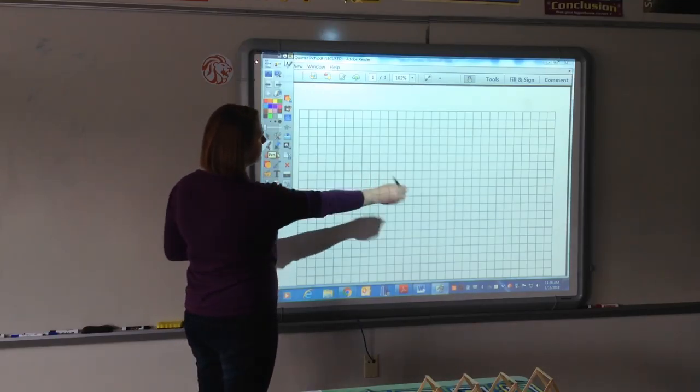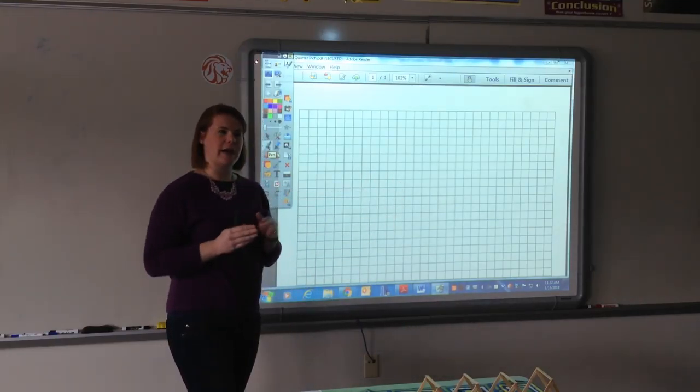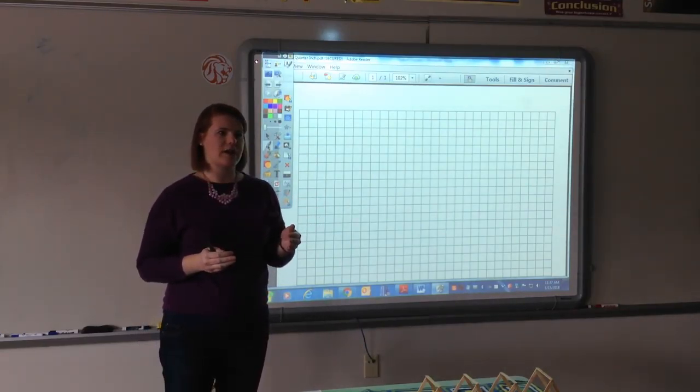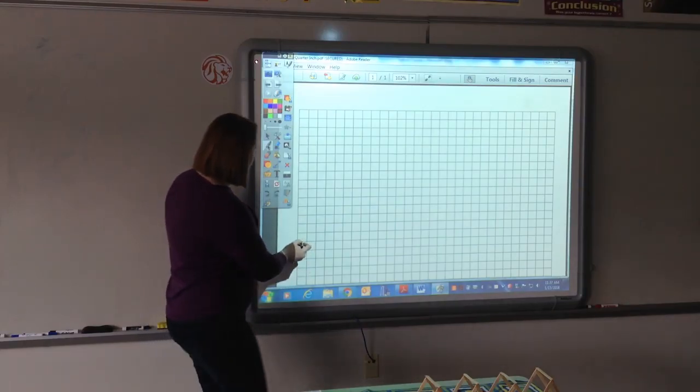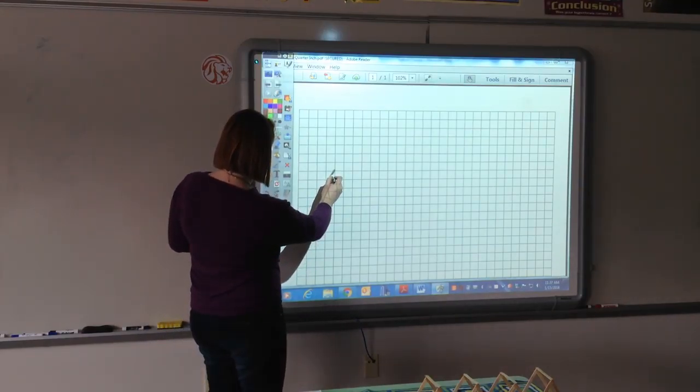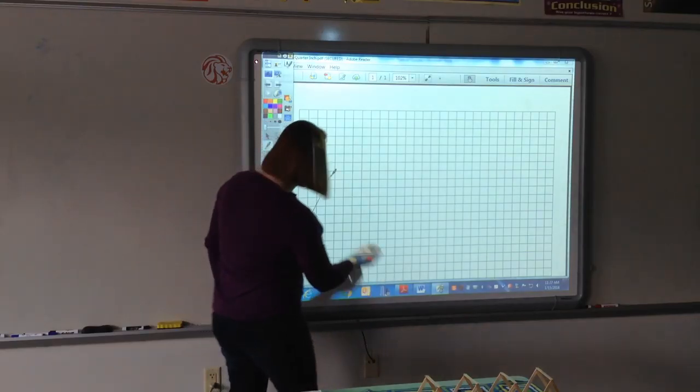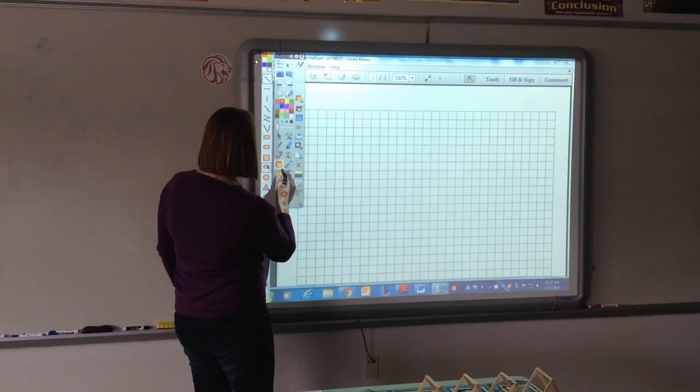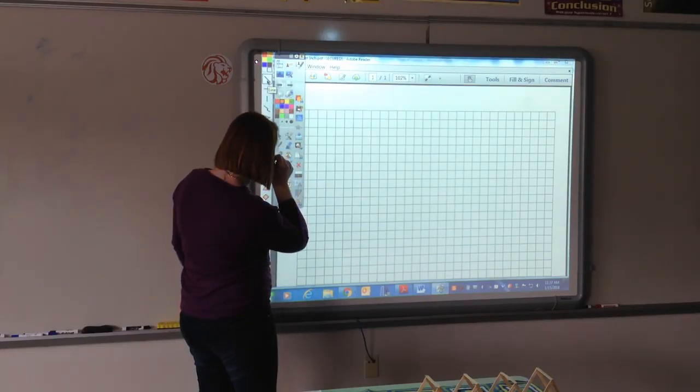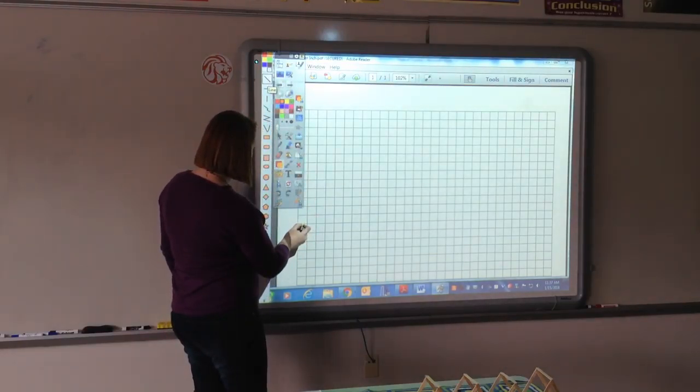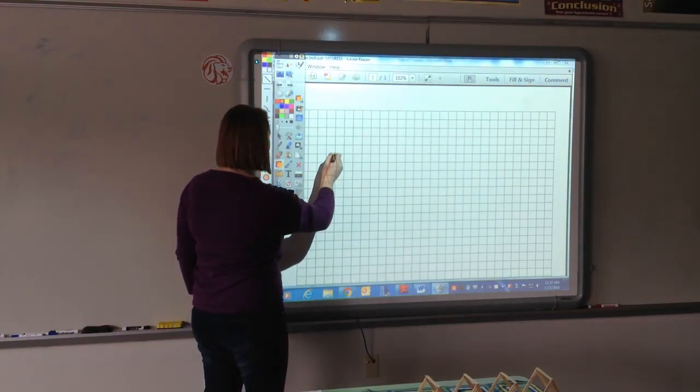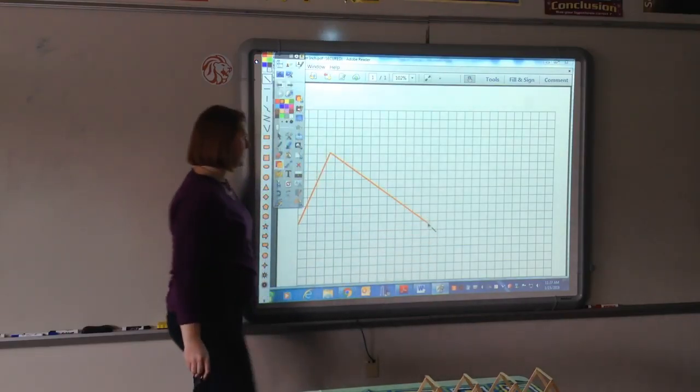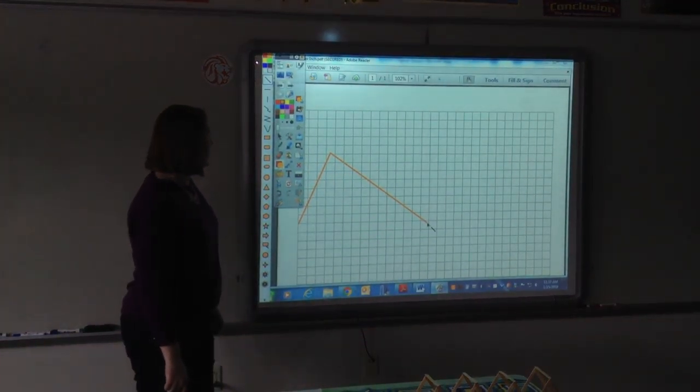And like I said before, my bridge needs to be as long as the paper. And you want it to be a symmetrical bridge. So if I make my first line like this, I don't want to make my next line like that. Does that make sense? So you want your bridge to be symmetrical.